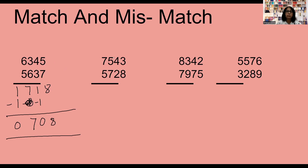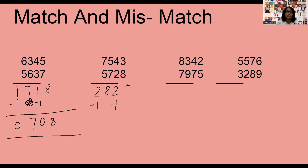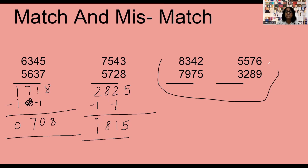One more example: 7 minus 5 is 2, it's a mismatch, so write minus 1 here. Complement of 7 is 3, and 3 plus 5 is 8. Now this is a match number — not mismatch — so you don't have to do anything. 4 minus 2 is 2, write it 2 here. Then it is a mismatch, so write minus 1. Complement of 8 is 2, and 2 plus 3 is 5. Now: 1, then 8, then 2 minus 1 is 1, and 5. The answer is 1, 8, 1, 5. Do these two practice questions yourself.